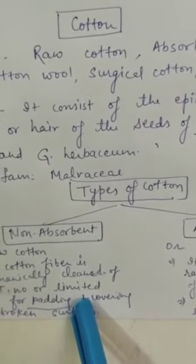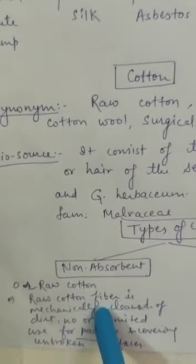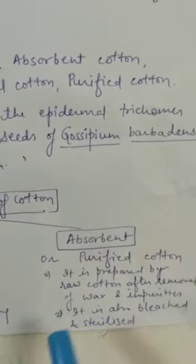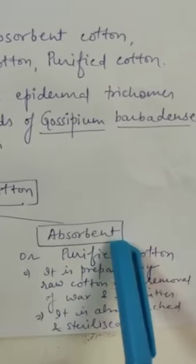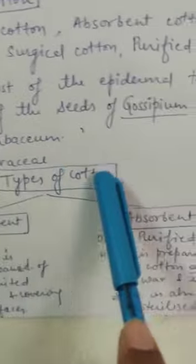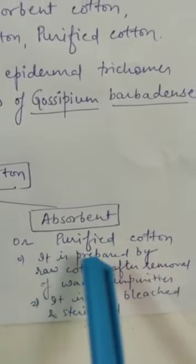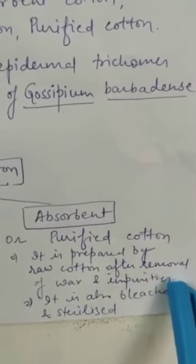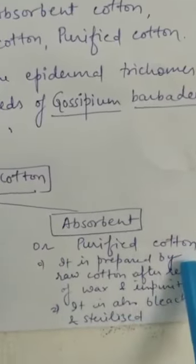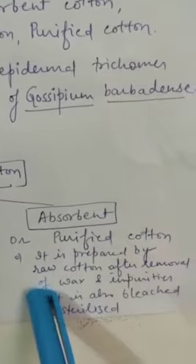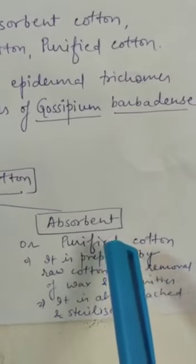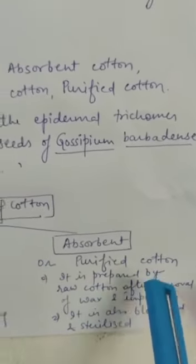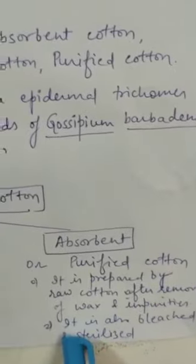The cotton we use in dressings is absorbent cotton or purified cotton, prepared from raw cotton. Purified cotton is prepared from raw cotton after removal of wax and impurities. When we remove wax and impurities from raw cotton, we get absorbent cotton and purified cotton, which is bleached to make it white and sterile.